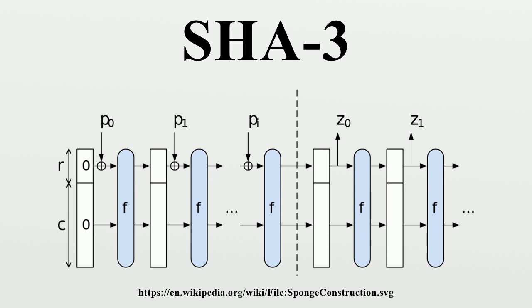SHA-3 uses the sponge construction, in which data is absorbed into the sponge, then the result is squeezed out. In the absorbing phase, message blocks are XORed into a subset of the state, which is then transformed as a whole. In the squeeze phase, output blocks are read from the same subset of the state, alternated with state transformations. The size of the part written and read is called rate, and the part that is untouched by input-output is called capacity. The capacity determines the security of the scheme. The maximum security level is half the capacity.